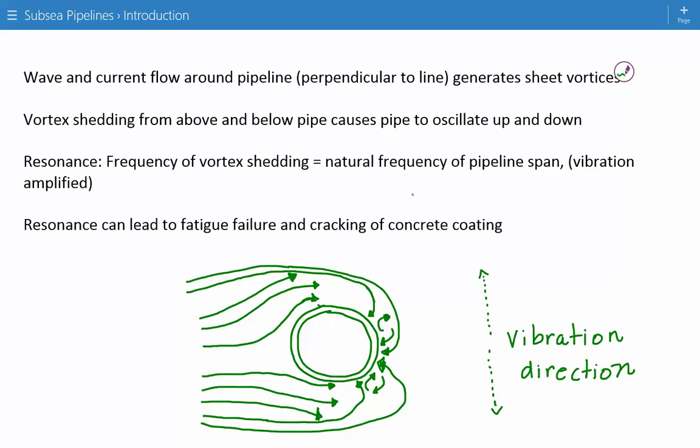So the key thing here is to make sure that you avoid resonance. And resonance is when the frequency of the vortex shedding equals to the natural frequency of the pipeline span. So if resonance occurs, the vibration can be amplified greatly. So the displacement of this pipe, it can move up and down a relatively large distance. And this excessive vibration, especially large distance vibration, can lead to fatigue failure and cracking of the concrete coating, if there is concrete coating.